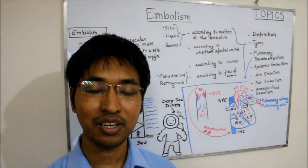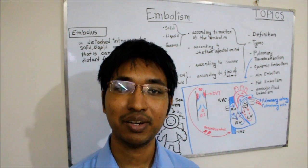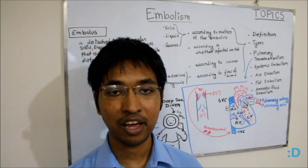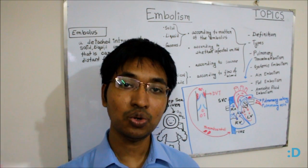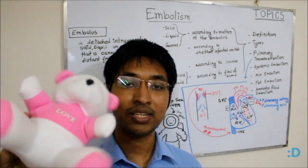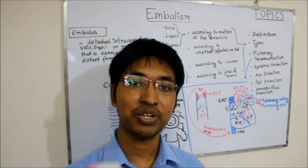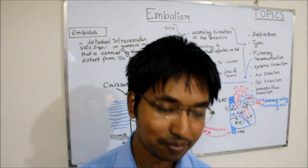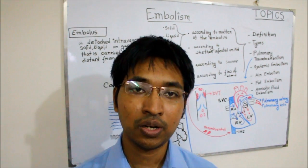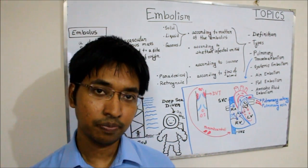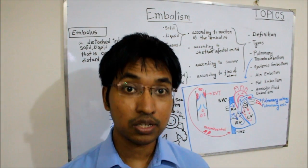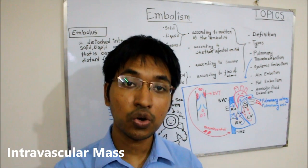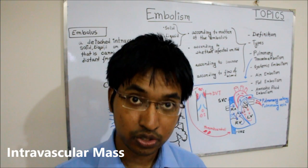I hope you're still with me — you didn't run away just like my students do when I try to teach them definitions of pathology. I even have to show them Teddy, so I am also showing you guys Teddy. Stay calm because I will explain this definition line by line. What did I say in the first line? Embolus is intravascular — that means this mass is occurring inside our cardiovascular system.